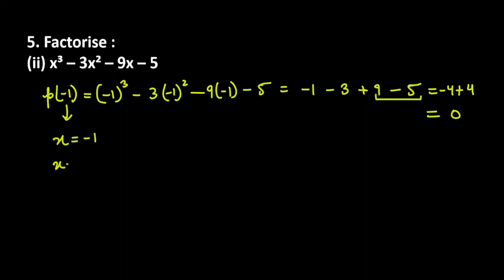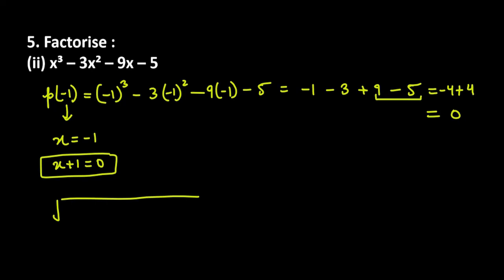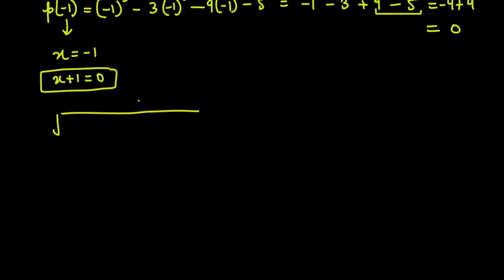Since one of the factors is x = minus 1, we write x + 1 = 0, meaning x plus 1 is a factor of the polynomial. Now we divide the polynomial x cube minus 3x square minus 9x minus 5 by x plus 1. Outside we have x, inside the first term is x cube, so we multiply by x square.